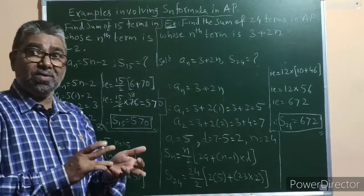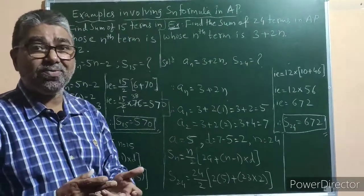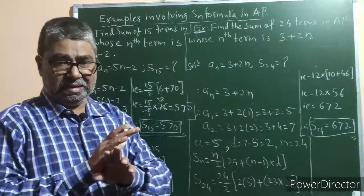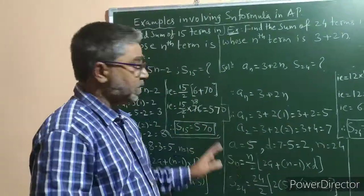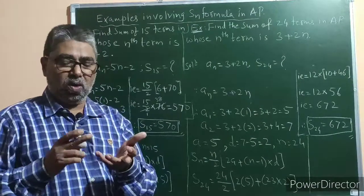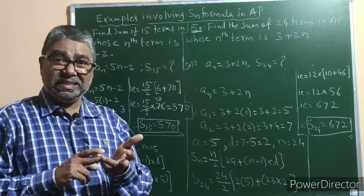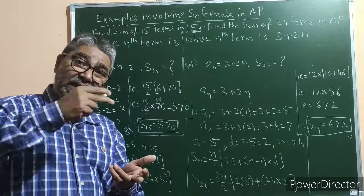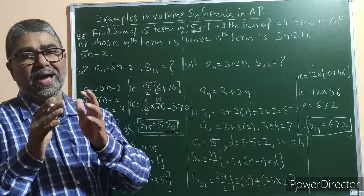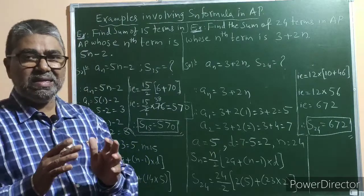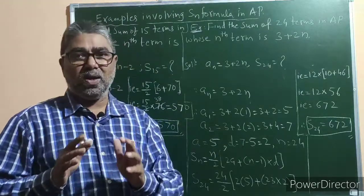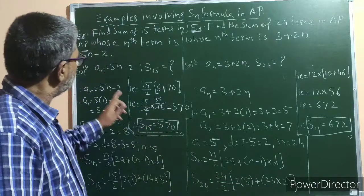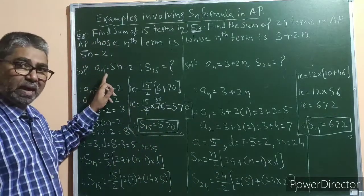In these examples, the nth term is given. The first term and the common difference are not given, nor is the arithmetic progression itself given. So from the nth term, we have to find the first term a1, and to find the common difference we have to find a2 as well. The value of a1 subtracted from a2 will give us the common difference d.